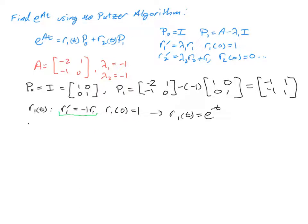Now, the R2 is more complicated, but R2 is going to solve a linear equation. R2 prime is equal to negative 1 R2 plus R1. And if we rewrite this as R2 prime plus R2 is equal to R1, we get R2 prime plus R2 equals E to the negative T. And the initial condition is R2 of 0 equals 0, and they're all 0 from after we find R2.